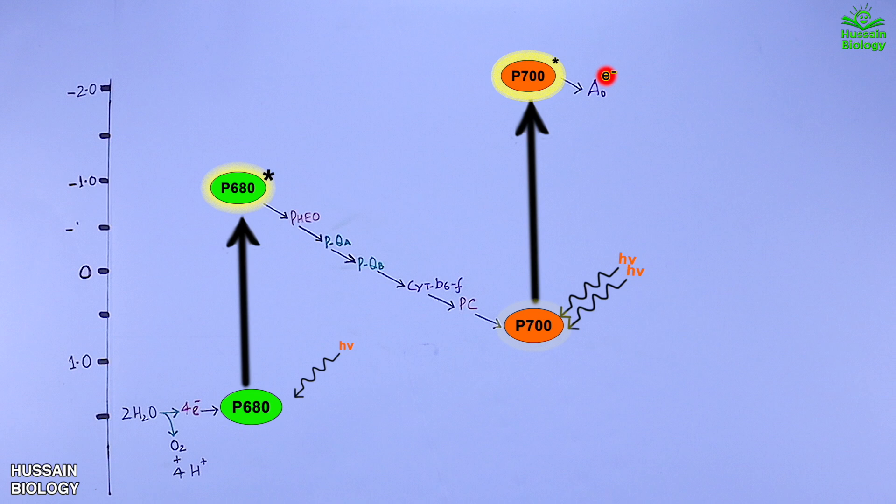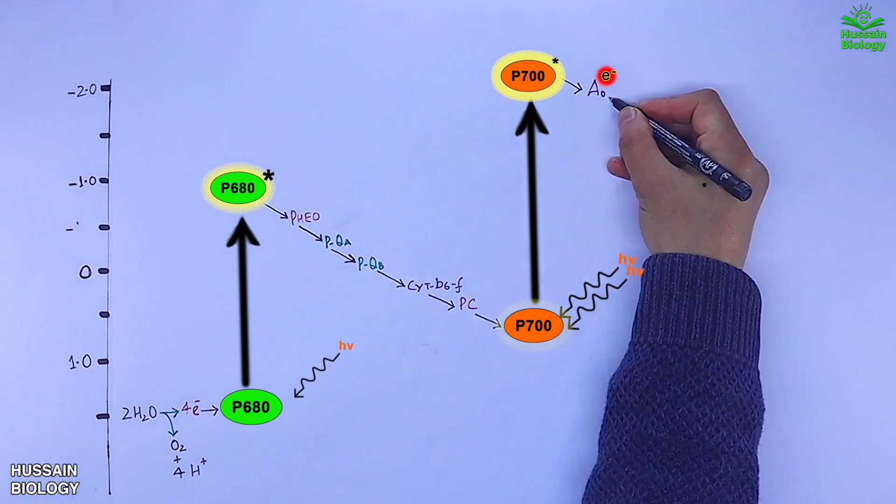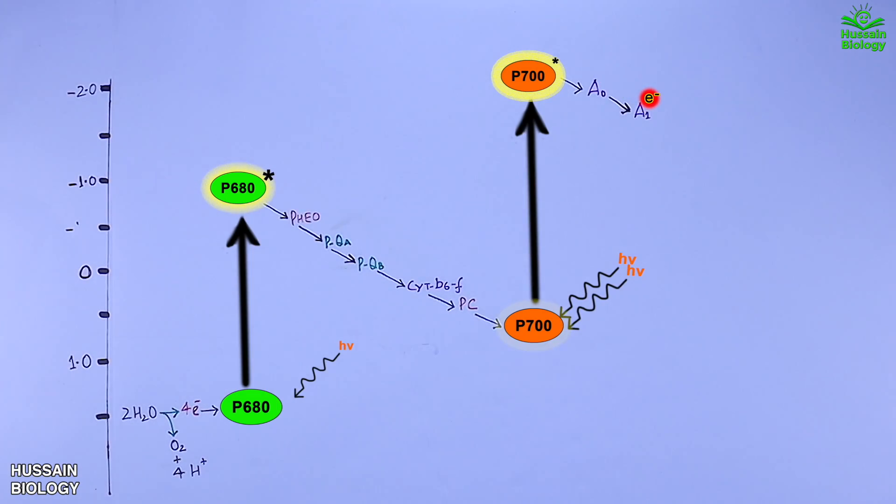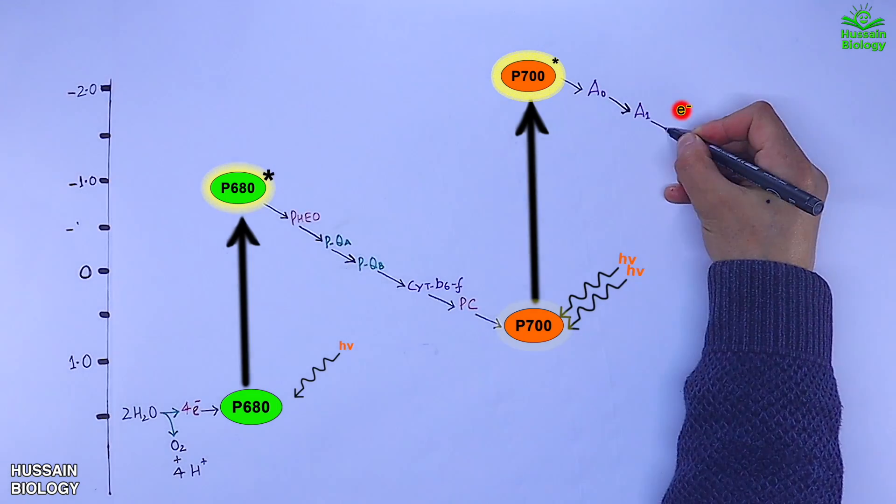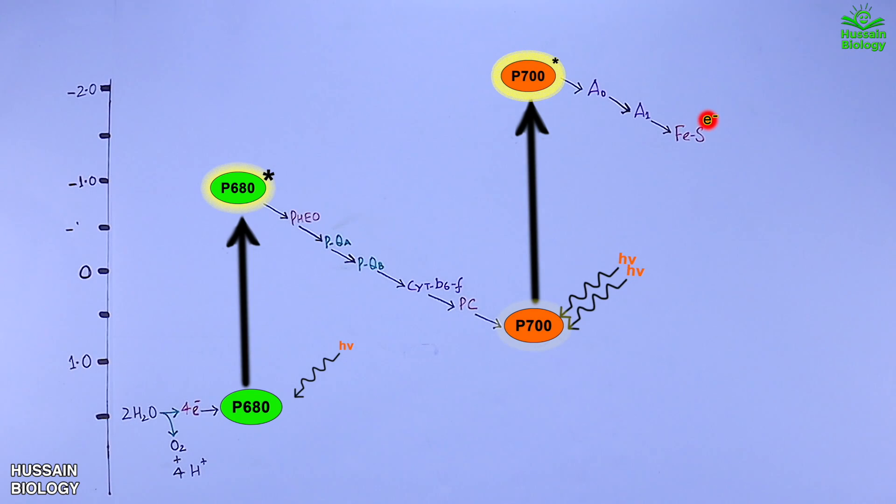Now let's get back to A0, which is the modified chlorophyll that has just received the electrons from P700. From here the electrons are transferred to A1, which is phyloquinone. Then they are transferred to iron-sulfur proteins, that's FeS, and this FeS then transfers the electrons towards ferredoxin as shown in the diagram.